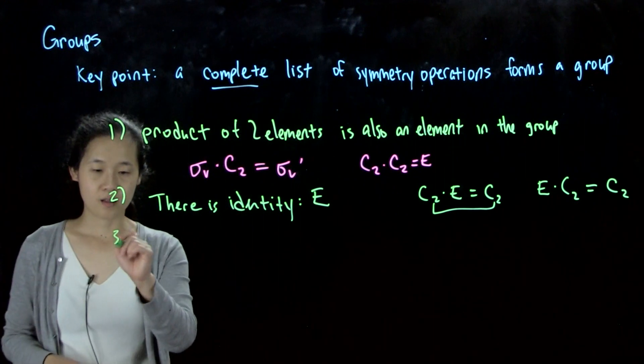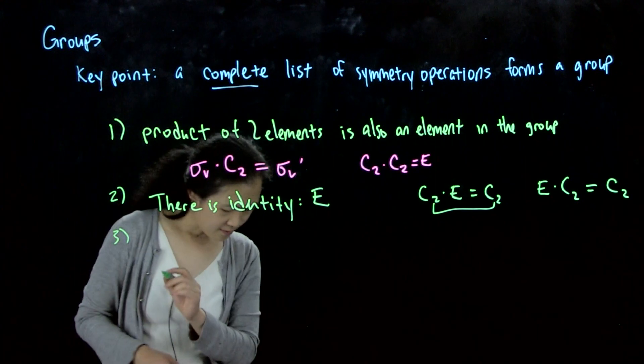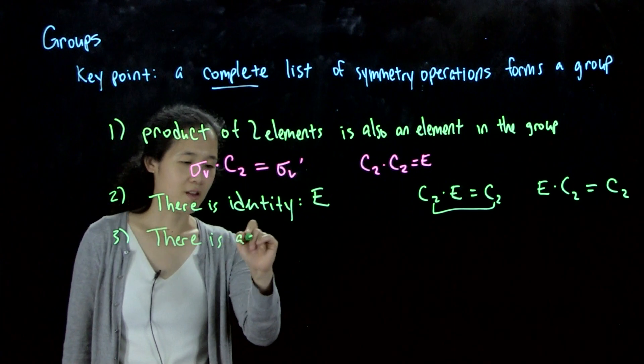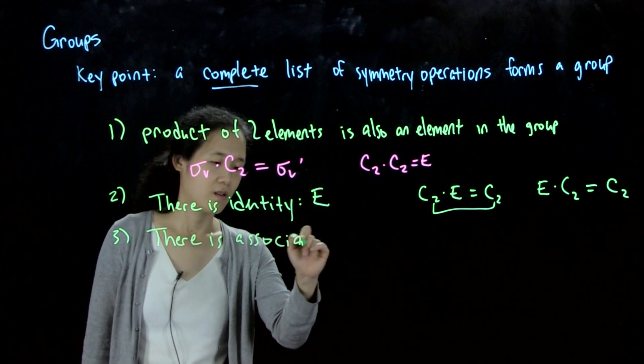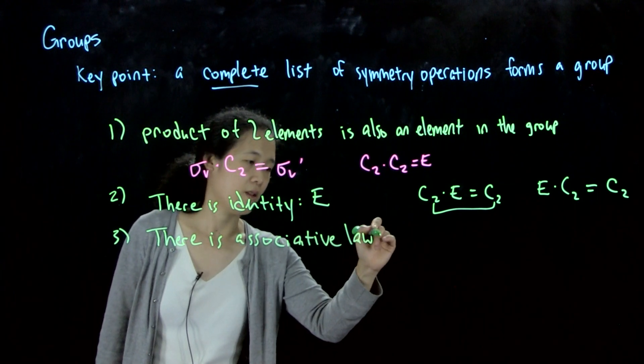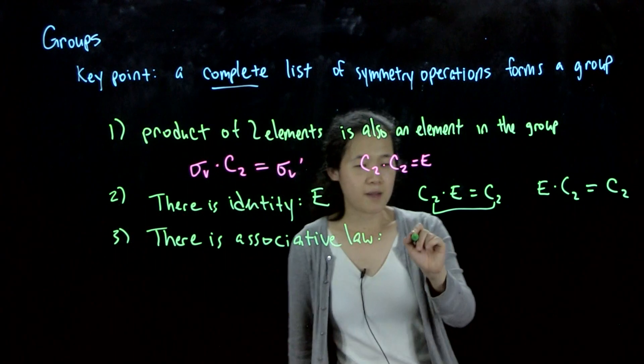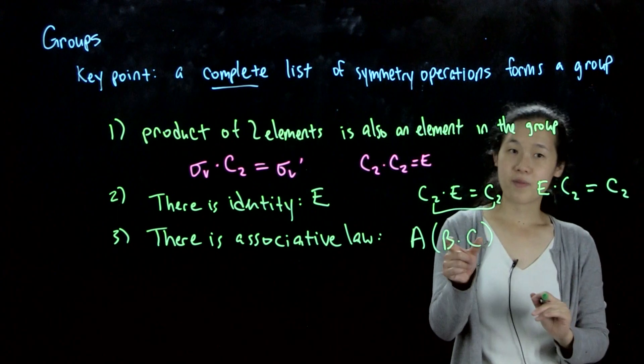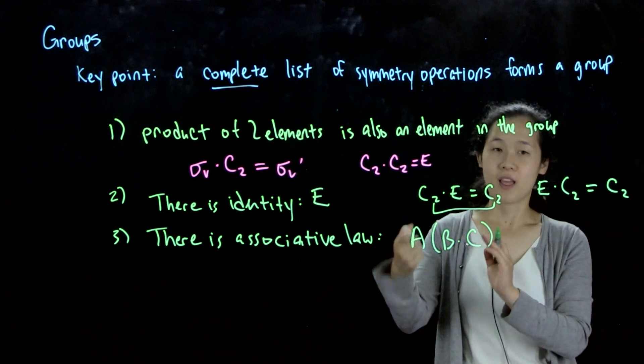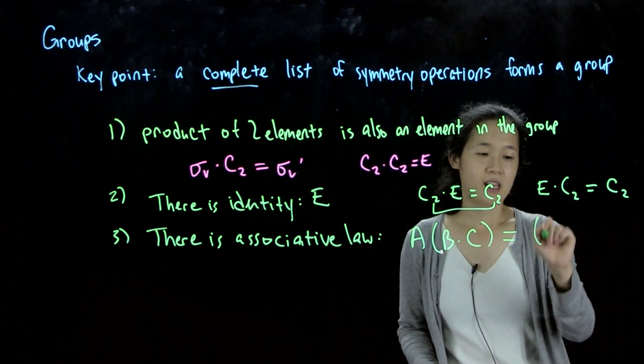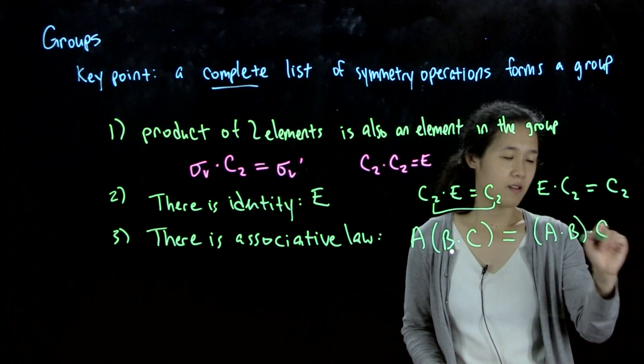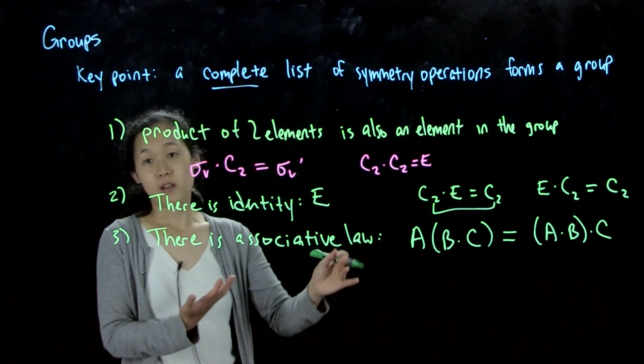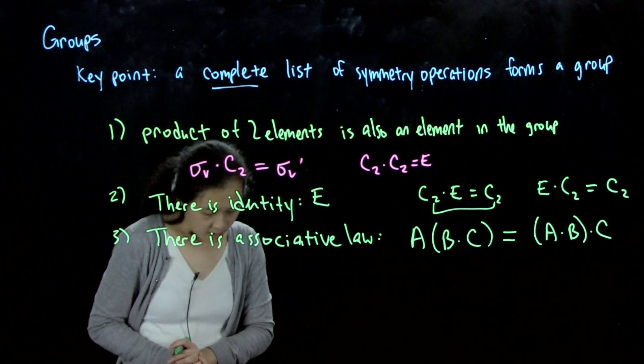Rule 3. There is the associative law. There is associative law, aka if you had parentheses. So if we did A times parentheses B times C, this is going to be the same thing as if we did parentheses A times B times C. So I won't prove that with examples, but hopefully you can do that on your own with symmetry operations and see that it works.